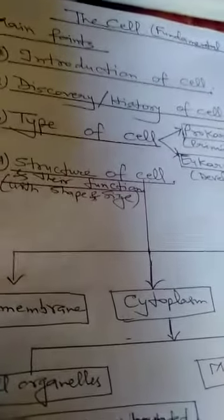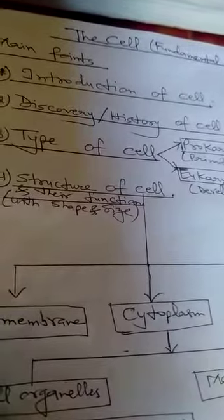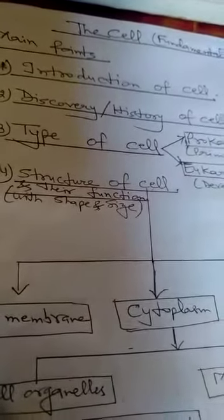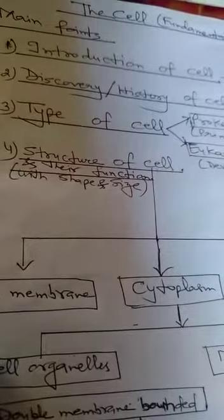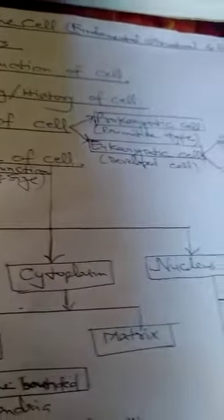Then, second point is discovery, means history of the cell. How cell discovered and who discovered it. Then, third part is type of cell. That there are two types, you know, prokaryotic and eukaryotic.